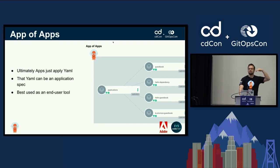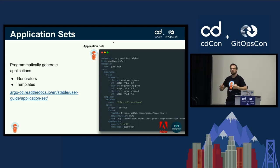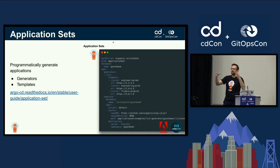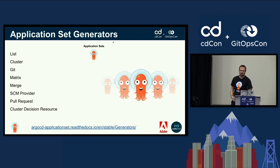The next meta layer up beyond that are application sets. Application sets allow you to programmatically generate applications. We have our application policy, we can have an app of apps, and now we can have an application set. It's basically two components: generators, and templates — where templates represent what a generated application is going to look like and what details to fill in.